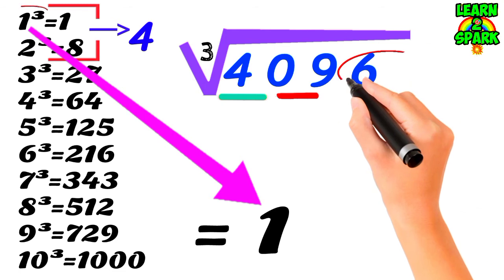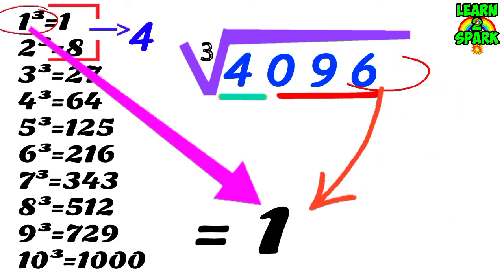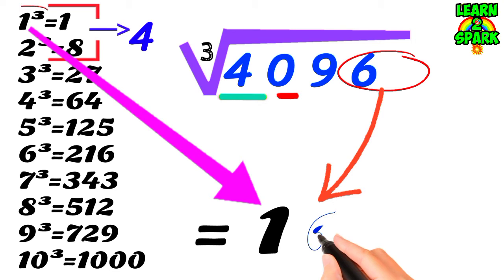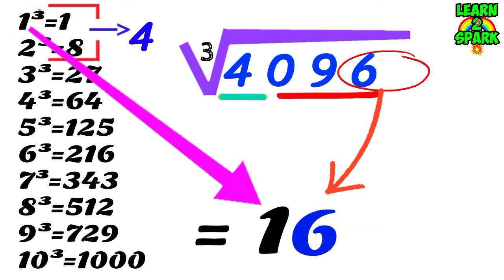Now consider the units place of the second group which is 6 here. And as the rule says, 6 never gets changed. So 6 will come down for the final answer and your answer is 16.